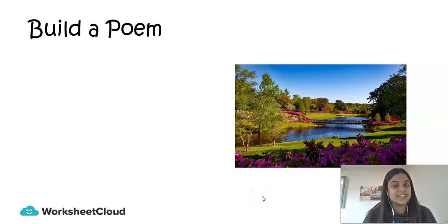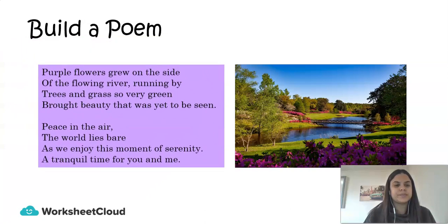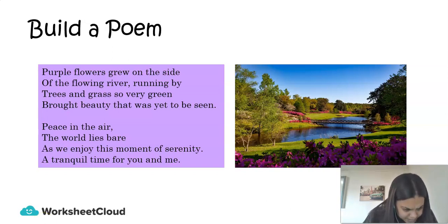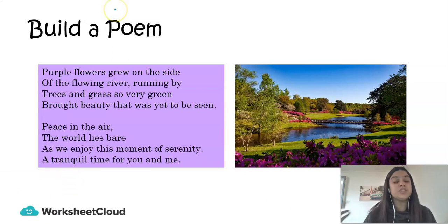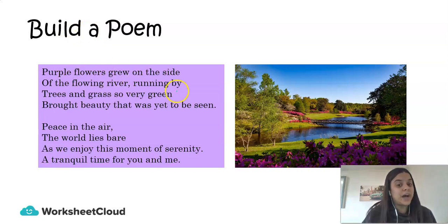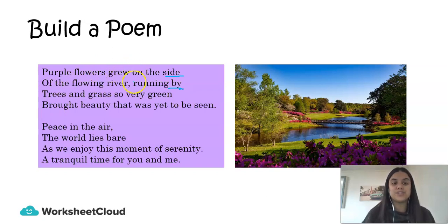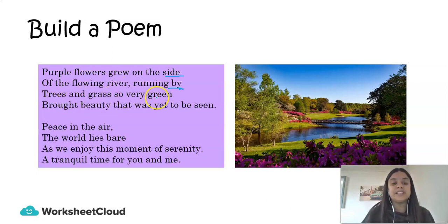We're going to start with one line first. Let's think of 'the flowers grow on the side.' My last word is 'side,' and if I decide to use a rhyming word, I try to remember every other word that could rhyme with 'side,' like 'lied' or 'hide,' and then I write my next line. But remember, it can't just be any words put together — they must make sense and relate to the picture. So let's see what I came up with: 'Purple flowers grew on the side of the flowing river running by. Trees and grass, so very green, brought beauty that was yet to be seen.'